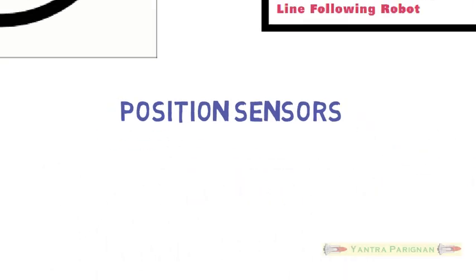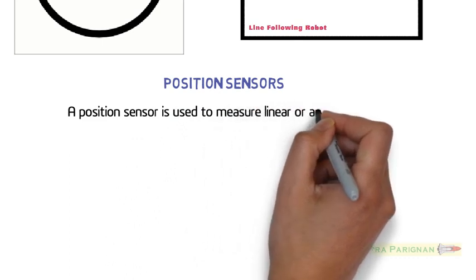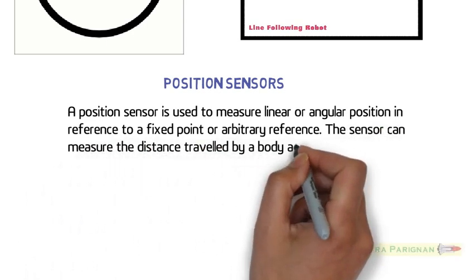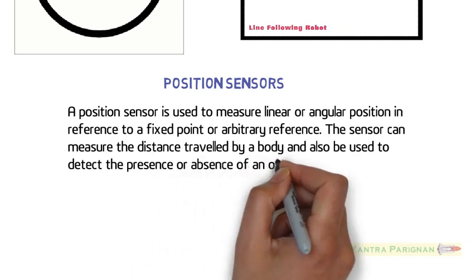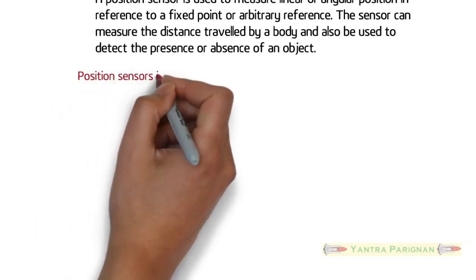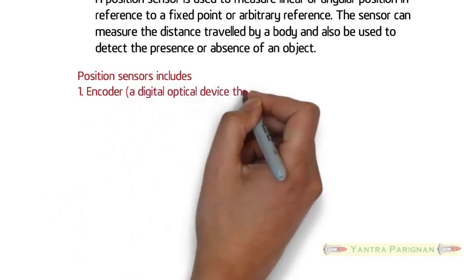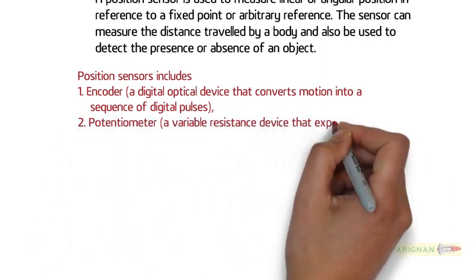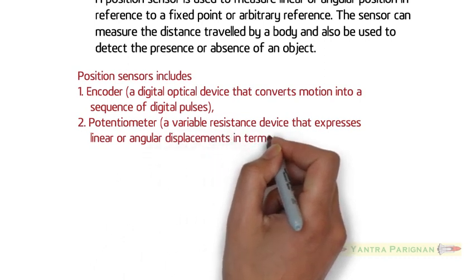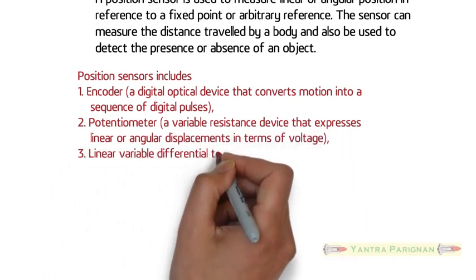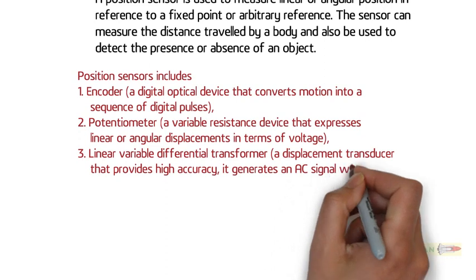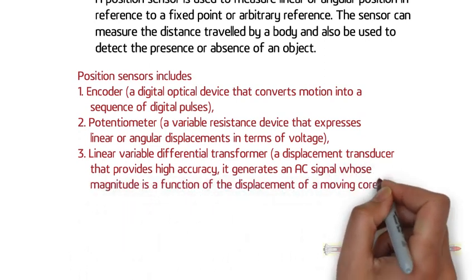Position sensors. A position sensor is used to measure linear or angular position in reference to a fixed point or arbitrary reference. The sensor can measure the distance traveled by a body and also be used to detect the presence or absence of an object. The position sensors include an encoder that is a digital optical device that converts motion into a sequence of digital pulses, a potentiometer that is a variable resistance device that expresses linear or angular displacements in terms of voltage, a linear variable differential transformer is a displacement transducer that provides high accuracy. It generates an AC signal whose magnitude is a function of the displacement of a moving core, synchros and resolvers.